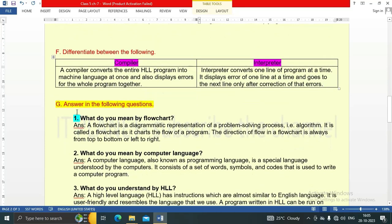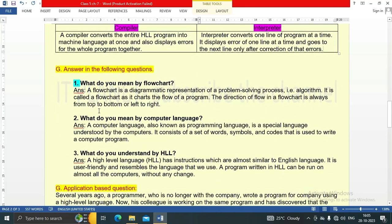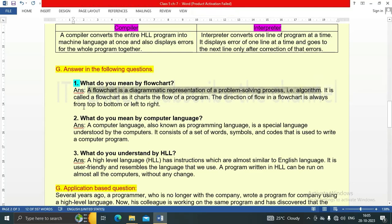Question number G: answer the following questions. Three questions are there. Number one: what do you mean by flowchart? A flowchart is a diagrammatic representation of a problem solving process, that is, algorithm. It is called a flowchart as it charts the flow of program. The direction of flow in a flowchart is always from top to bottom or left to right.